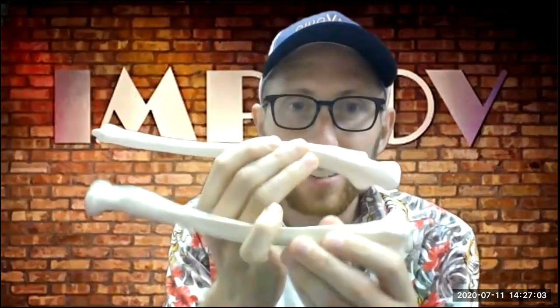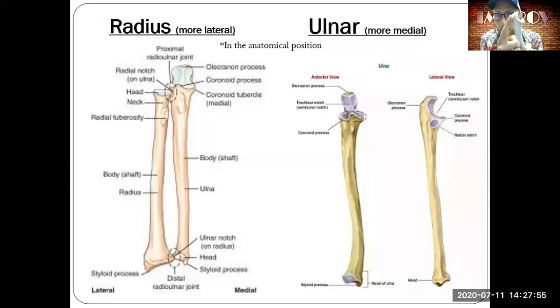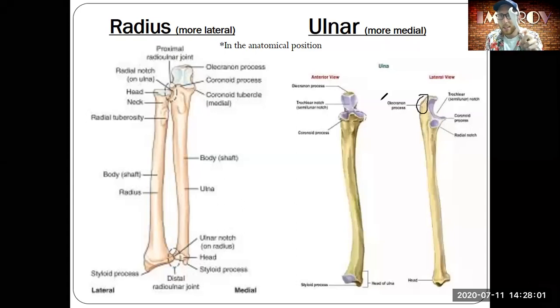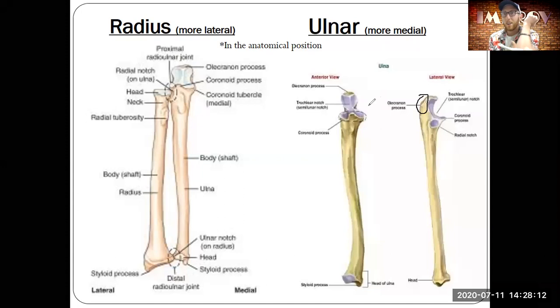Don't get the radius or ulna confused with the fibula — that long bone belongs to the lower body. A key bony landmark is the olecranon process on the back of the U of the ulna. It's the bump on the back of your elbow. Go ahead and feel for it — you can hit it on the table if you want to. That bump is the olecranon process.